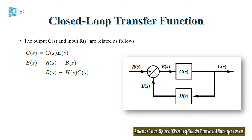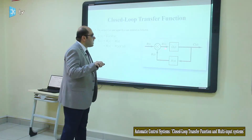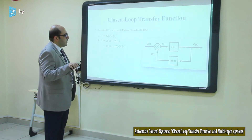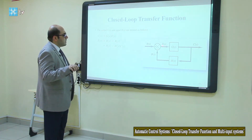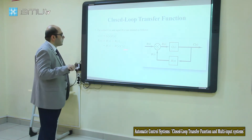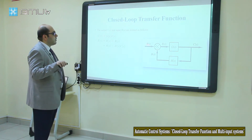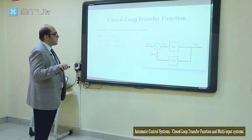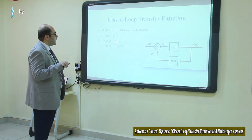Again, we learned how to calculate the error signal. We can say that E(s) is equal to R(s) minus the feedback signal B(s).